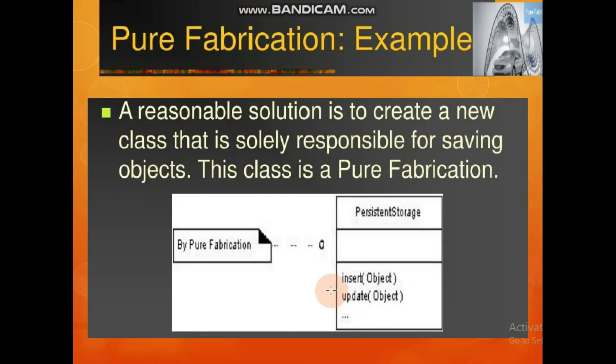In the example of Pure Fabrication, a reasonable solution is to create a new class — an artificial class — which is only responsible for one thing: saving objects. We say this is a Pure Fabrication. This artificial class supports high cohesion, low coupling, and reusability.